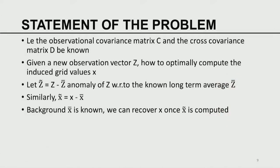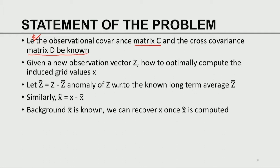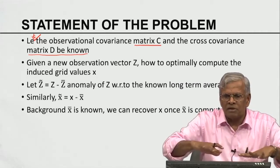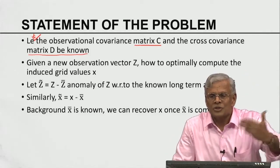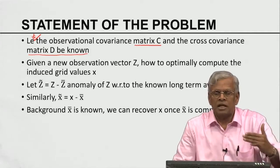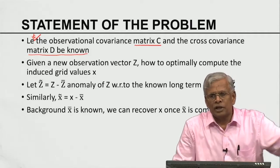What is the statement of the problem? Let the observational covariance C and the cross-covariance D be known. C and D represent the stationary values of the covariance between observations and the cross-covariance between observations and the grid. Because the underlying processes are stationary, C and D do not change in time — especially if you consider a long time series.